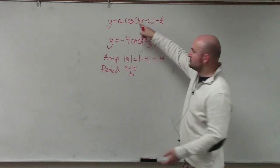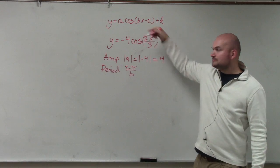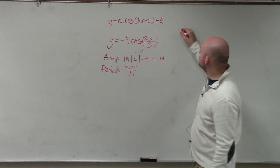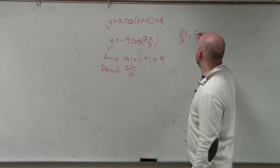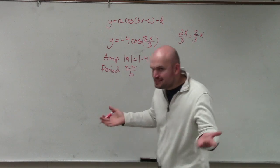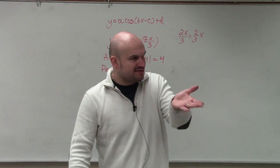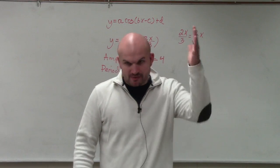Well, in this case, b is what is being multiplied by your x. So you need to make sure that you understand that 2x divided by 3 is equivalent to 2/3 times x. That's the same thing. 2 times the number divided by 3 is the same thing as multiplied by 2/3.